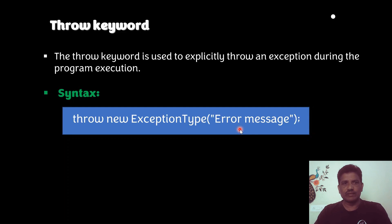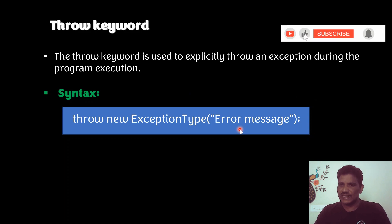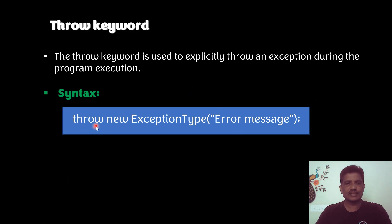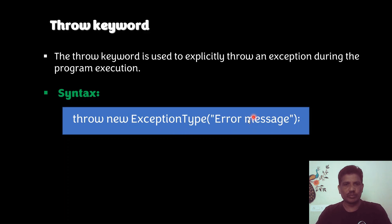What is the throw keyword? The throw keyword is used to throw an exception explicitly during program execution. Most exceptions are thrown implicitly, but in a few cases the developer can throw an exception explicitly using the throw keyword. See the syntax: throw new ExceptionClass(errorMessage). This syntax is used to throw an exception explicitly.